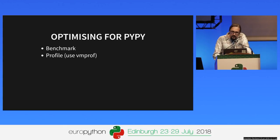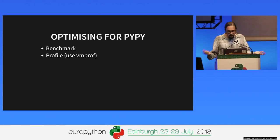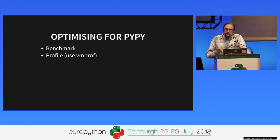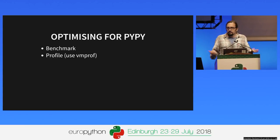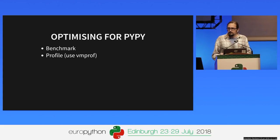The most interesting difference between PyPy and CPython is speed. People often say that PyPy provides magic speed-ups, and it often does. But it can do more than that. It's true that if you're lucky, you can have your program that used to run on CPython, try PyPy, and it's twice as fast.